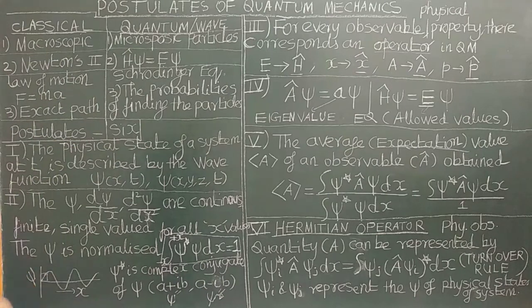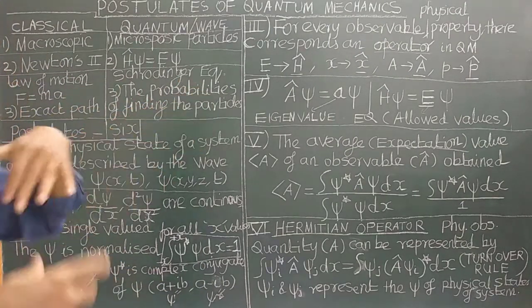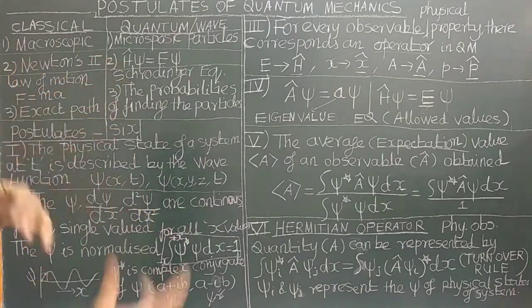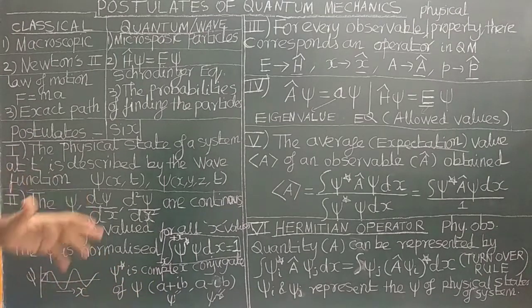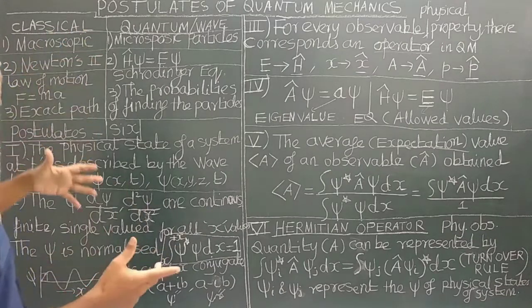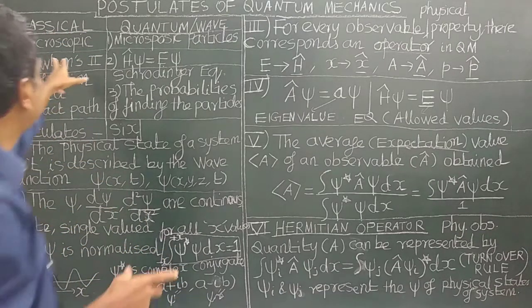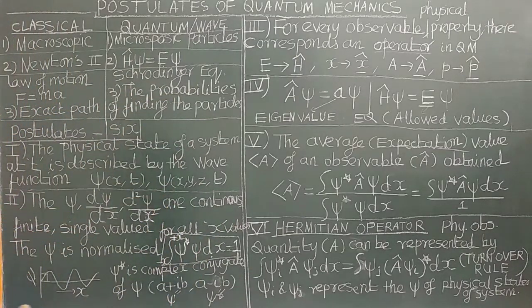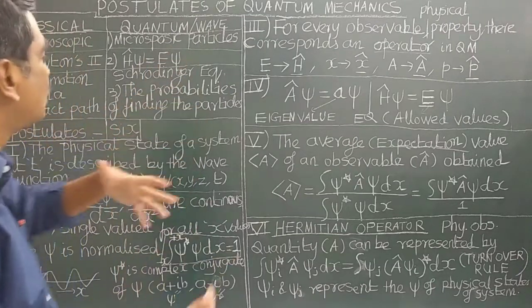Classical mechanics, otherwise called Newtonian mechanics, is used to explain the motion of macroscopic particles. Classical mechanics fails to explain the motion of microscopic particles. Therefore, quantum mechanics — or wave mechanics — was born.